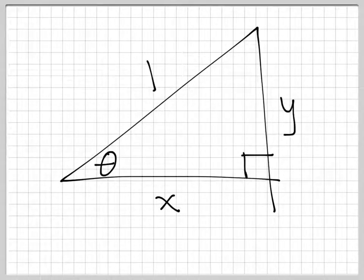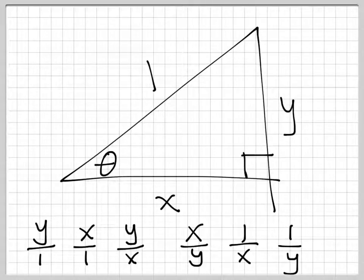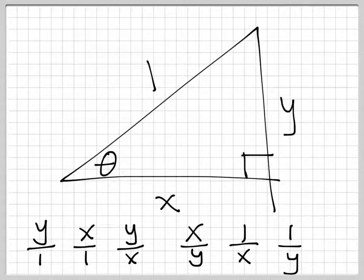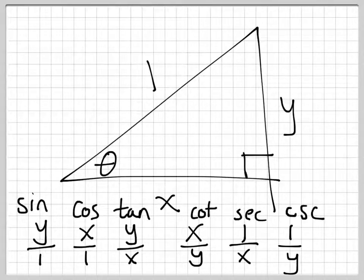Here is our unit triangle with theta. At the bottom we have x, y, and 1. The six possible ratios are y to 1, x to 1, y to x, x to y, 1 to x, and 1 to y — pick any two sides and put one over the other. These are the six possibilities and these are the six functions: cosine, sine, and tangent, plus cotangent, secant, and cosecant. It's all six possible ratios of sides for the right triangle with theta and x as its adjacent side.